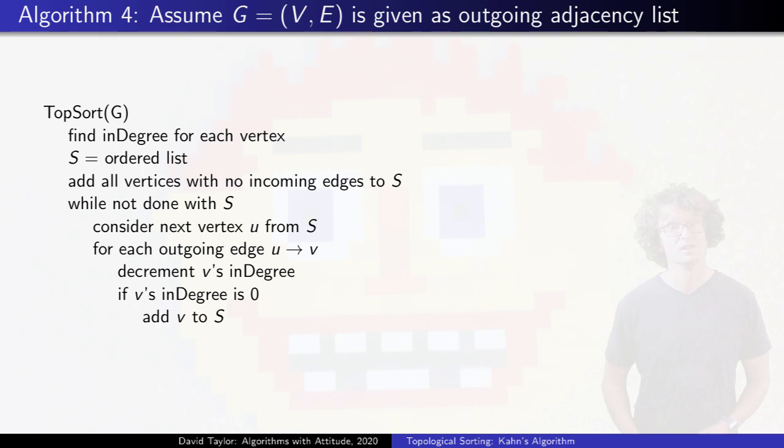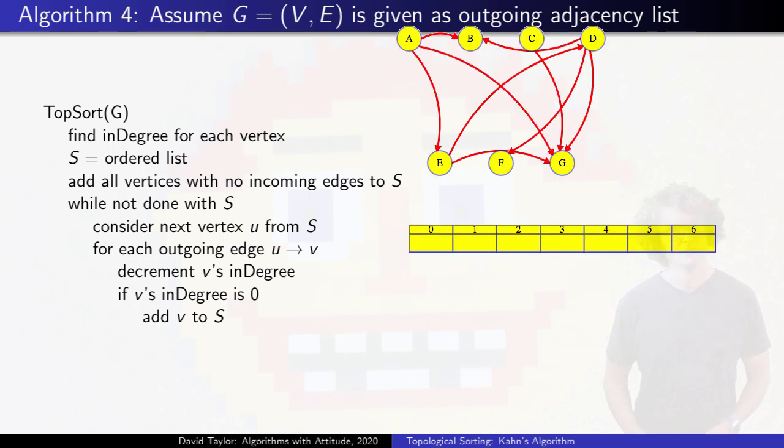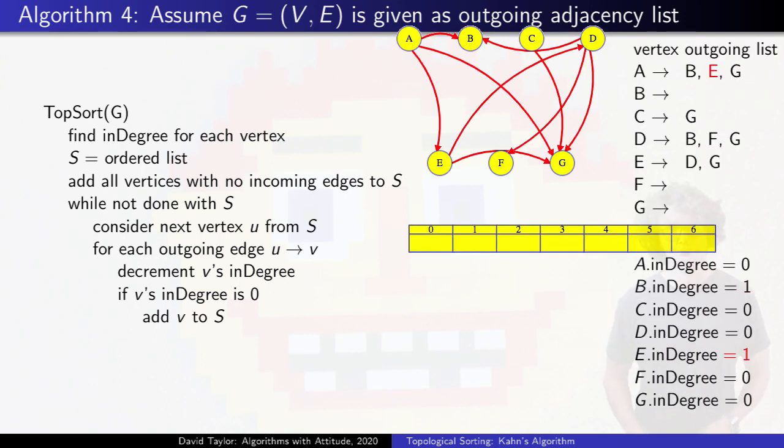Now a detailed example. For this graph, first go through all the edges to figure out vertex in degrees. Add A and C to our list, because they both have in degree zero. Taking A, we go through its outgoing edges. For each, decrement the in degree of the vertex it leads to.